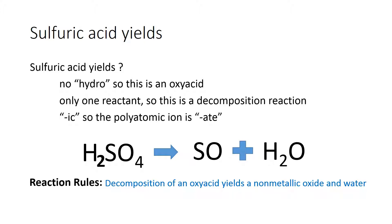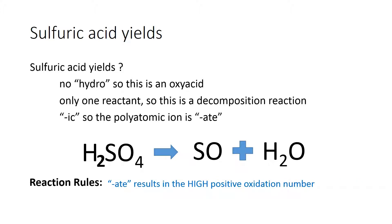You can write the 'and water' part yourself. We need to know how many sulfurs and oxygens there are in that non-metallic oxide, so we turn back to our reaction rules. The reaction rules say that if the reactant polyatomic ion ends in ATE, we choose the high positive oxidation number for sulfur. Sulfur has several oxidation numbers: negative two, plus four, and plus six. We want the high one, the plus six.